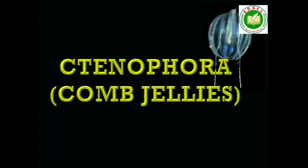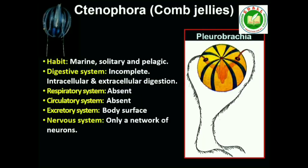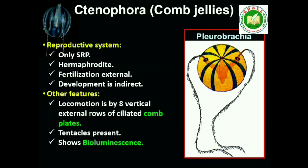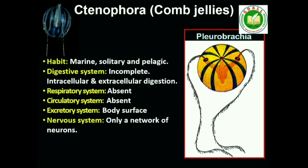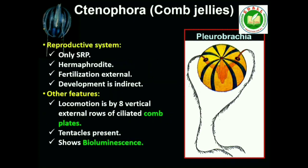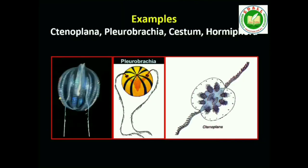Third is Phylum Ctenophora. Ctenophores, commonly known as sea walnuts or comb jellies, are exclusively marine, radially symmetrical, diploblastic organisms with tissue level of organization. The body bears eight external rows of ciliated comb plates, which help in locomotion. Digestion is both extracellular and intracellular. Bioluminescence — the property of a living organism to emit light — is well marked in ctenophores. Sexes are not separate. Reproduction takes place only by sexual means. Fertilization is external with indirect development. Examples: Pleurobrachia and Ctenoplana.